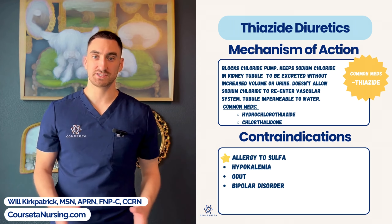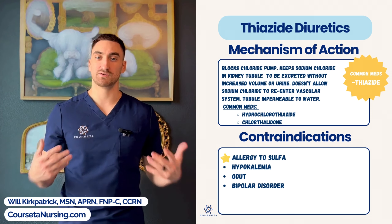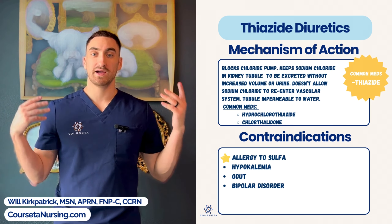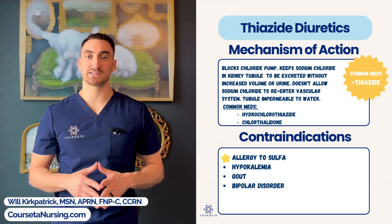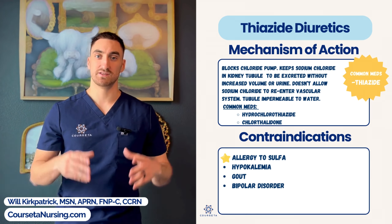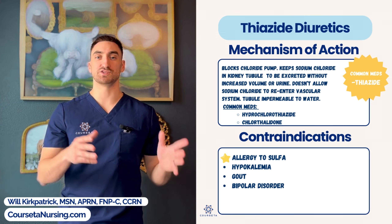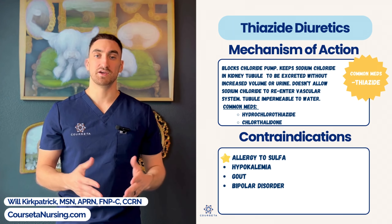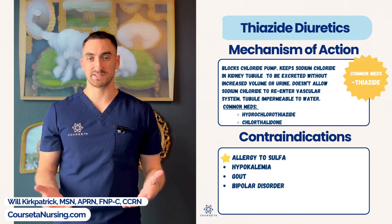The biggest contraindication is that this medication should never be given to a patient who is allergic to sulfa. Additionally, it's contraindicated in patients with hypokalemia. Another contraindication specific to thiazide diuretics is gout, because they decrease the excretion of uric acid, which is the main player in the development of gout. The last contraindication is patients being treated for bipolar disorder who take lithium, because lithium has reduced excretion when used in conjunction with thiazide diuretics.